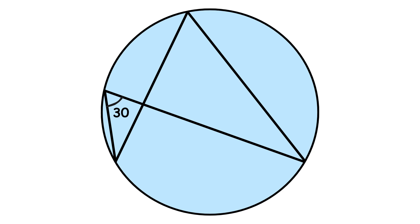Take a look at this example. As you can see, one of the angles is 30 degrees. If you look closely, you can see both pairs of lines are on the same segment. Given this, we know that the other angle is also 30 degrees.